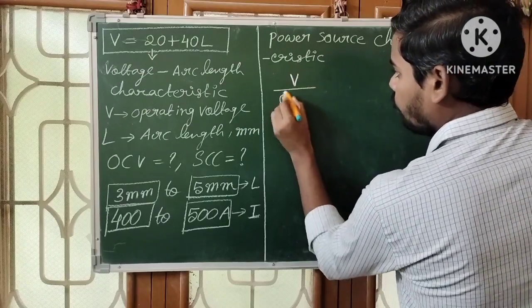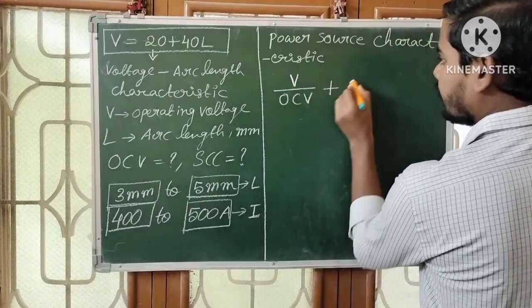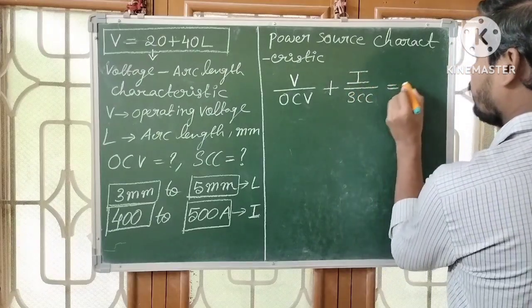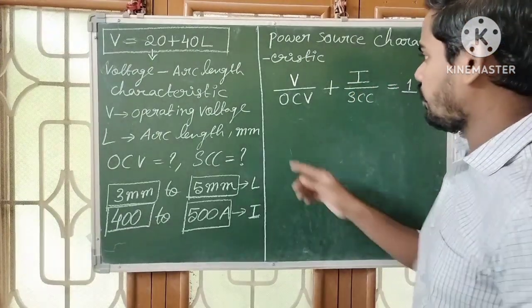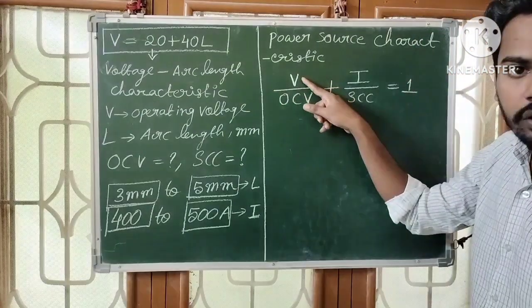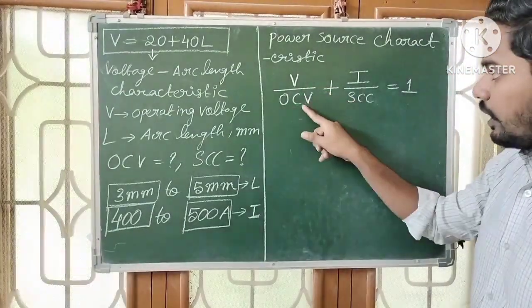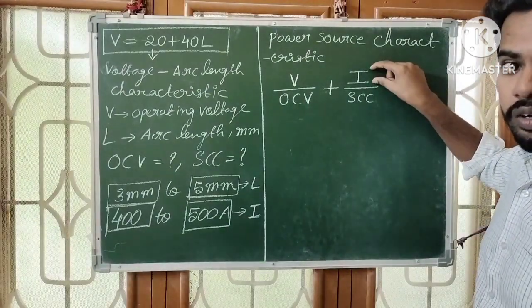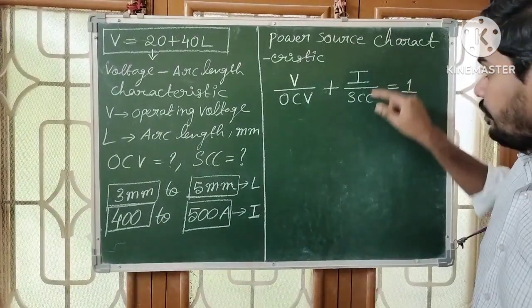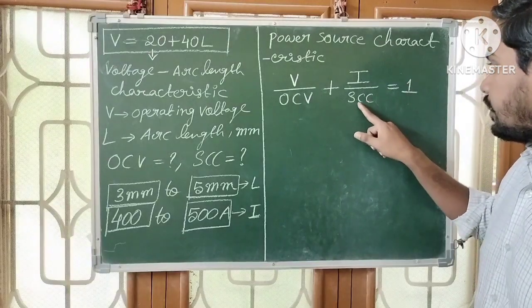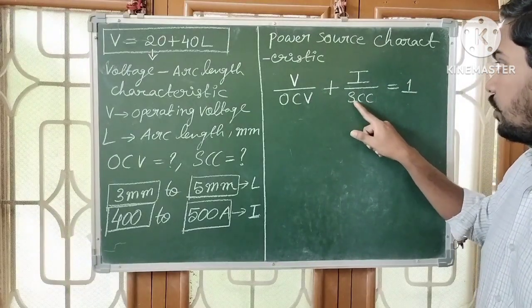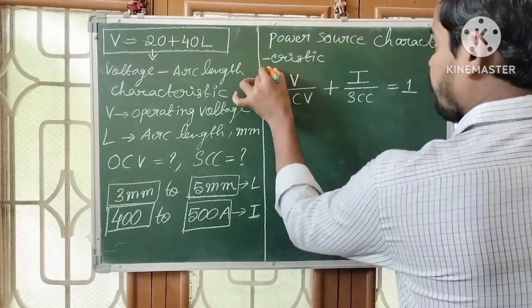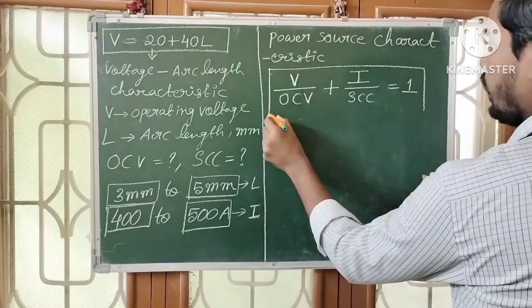According to the power source characteristic: V/OCV + I/SCC = 1, where V is the operating voltage, OCV is the open circuit voltage, I is the operating current, and SCC is the short circuit current. This equation is called the power source characteristic.